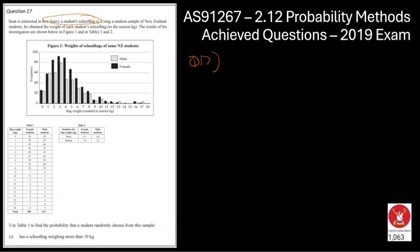They've used a random sample of students. He obtained the weight of these, all of them to the nearest kilogram. So we've got the units there. The result of the investigation is up here and they're also put in the tables down here. We've basically been asked to find the probability that a random student chosen from the sample has a school bag that weighs more than 10 kilos.